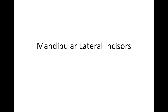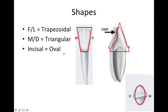This video is going to be about the mandibular lateral incisors. Let's look at the shape of the tooth. From a facial-lingual view, it's going to be trapezoidal. From a mesial-distal view, it's going to be triangular. And then from an incisal view, it's going to be oval.